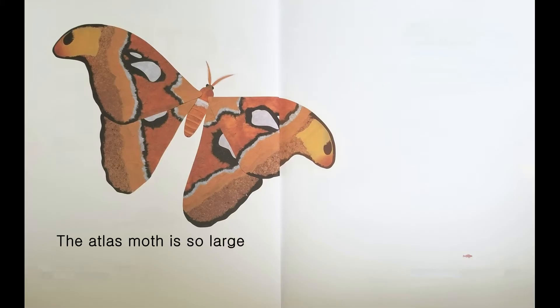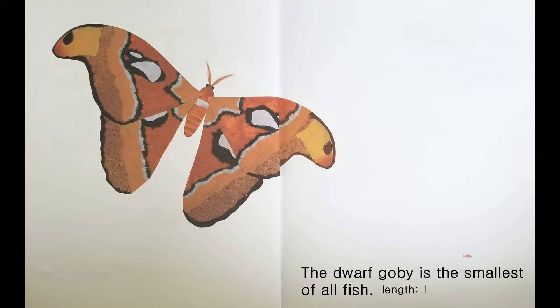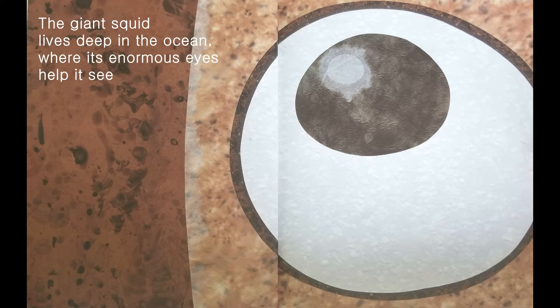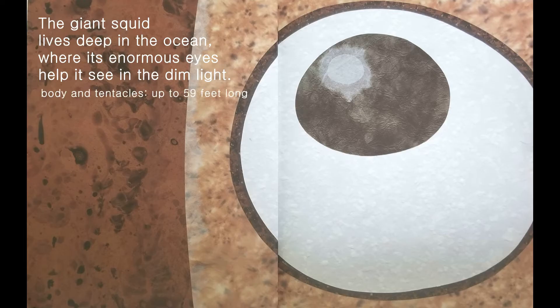The Atlas Moth is so large that it is often mistaken for a bird. The dwarf goby is the smallest of all fish. The giant squid lives deep in the ocean, where its enormous eyes help it see in the dim light. Body and tentacles up to 59 feet long. Eyes 12 inches across.